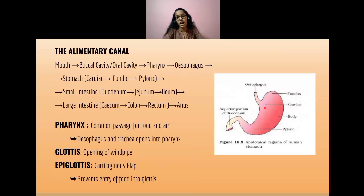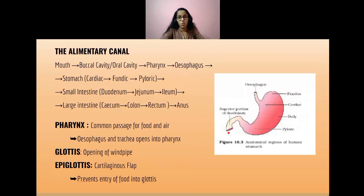The stomach contains three parts: the cardiac region at the upper end, the fundic region which is the more projected region above the cardiac, and the pyloric region towards the end of the stomach. Then comes the small intestine, starting with the duodenum, then the jejunum, and then the ileum.